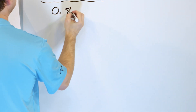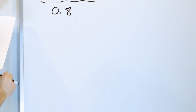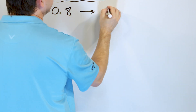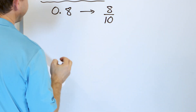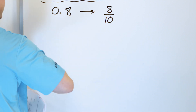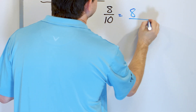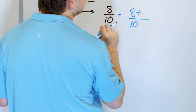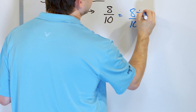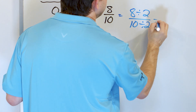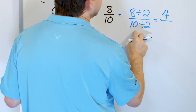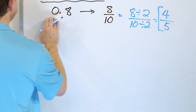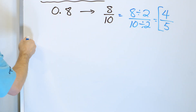Now let's convert 0.8 to a fraction. This is in the tenths place, so it's 8 tenths. Then we simplify: we divide top and bottom by 2. 8 divided by 2 is 4, and 10 divided by 2 is 5. We get an answer of 4 fifths. There's no whole number, so that's the final answer — 4 fifths.